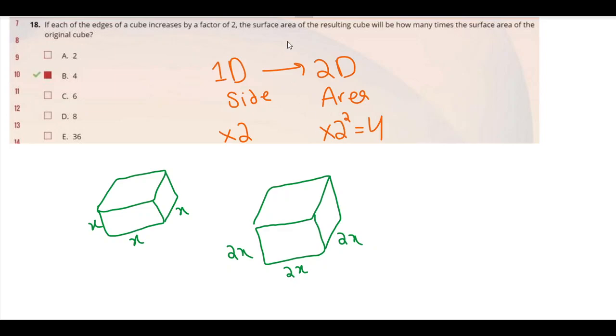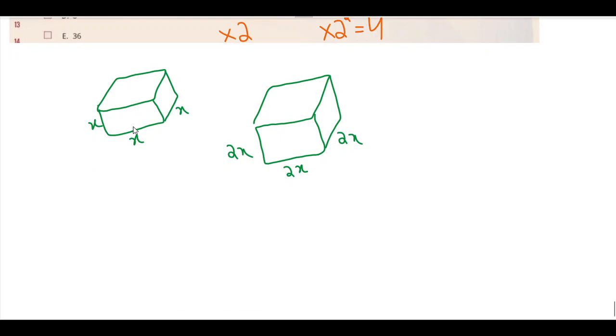And it's saying the surface area of the resulting cube will be how many times the surface area. So what's going to be the surface area of this one? So the surface area, if I'm talking about one side, it's basically x squared, but since there are six sides, I'm just going to multiply it by 6x squared.